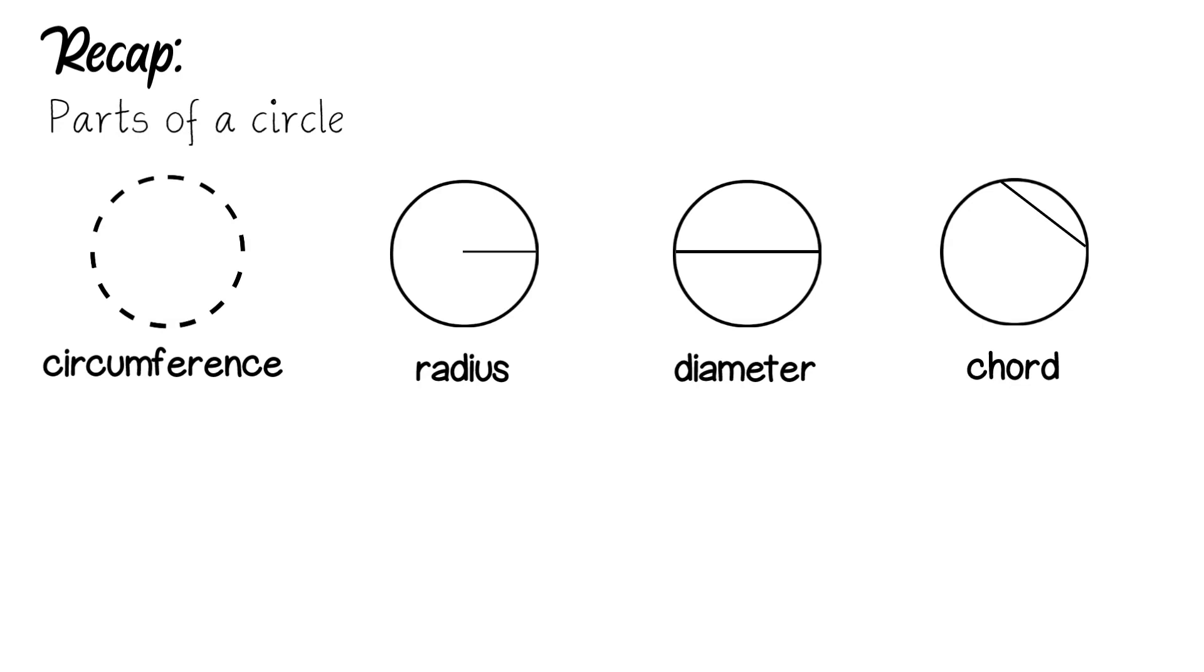The next part is called a tangent. The tangent is basically a line that touches the circle on the outside but only once.